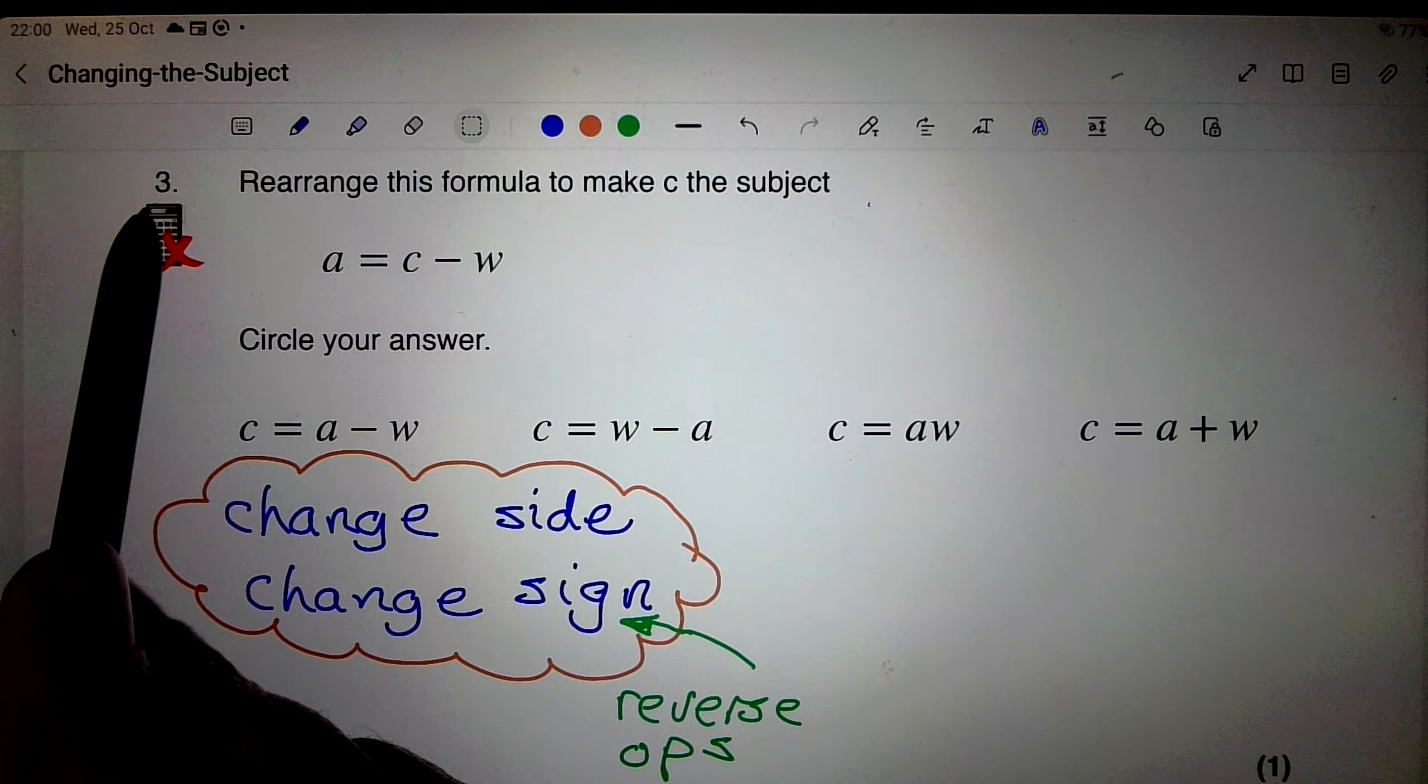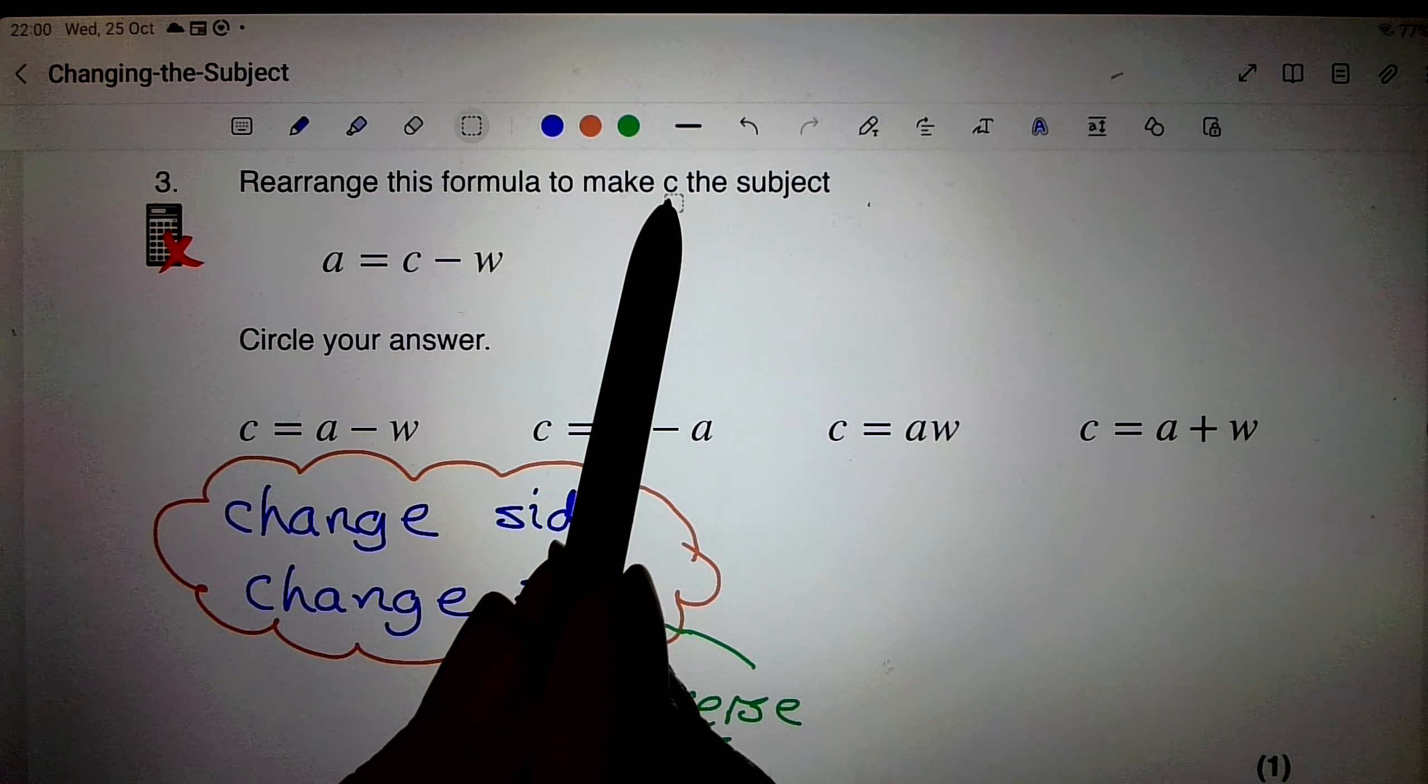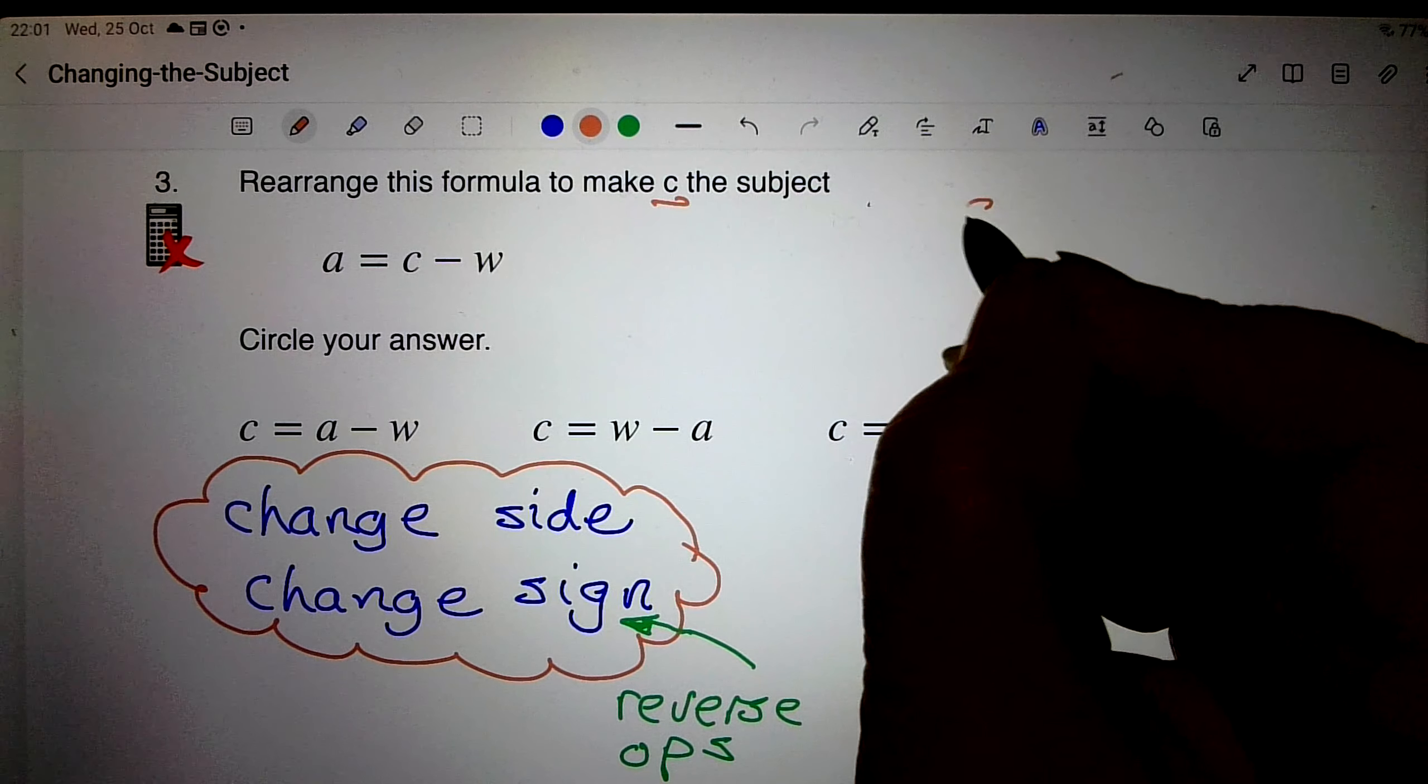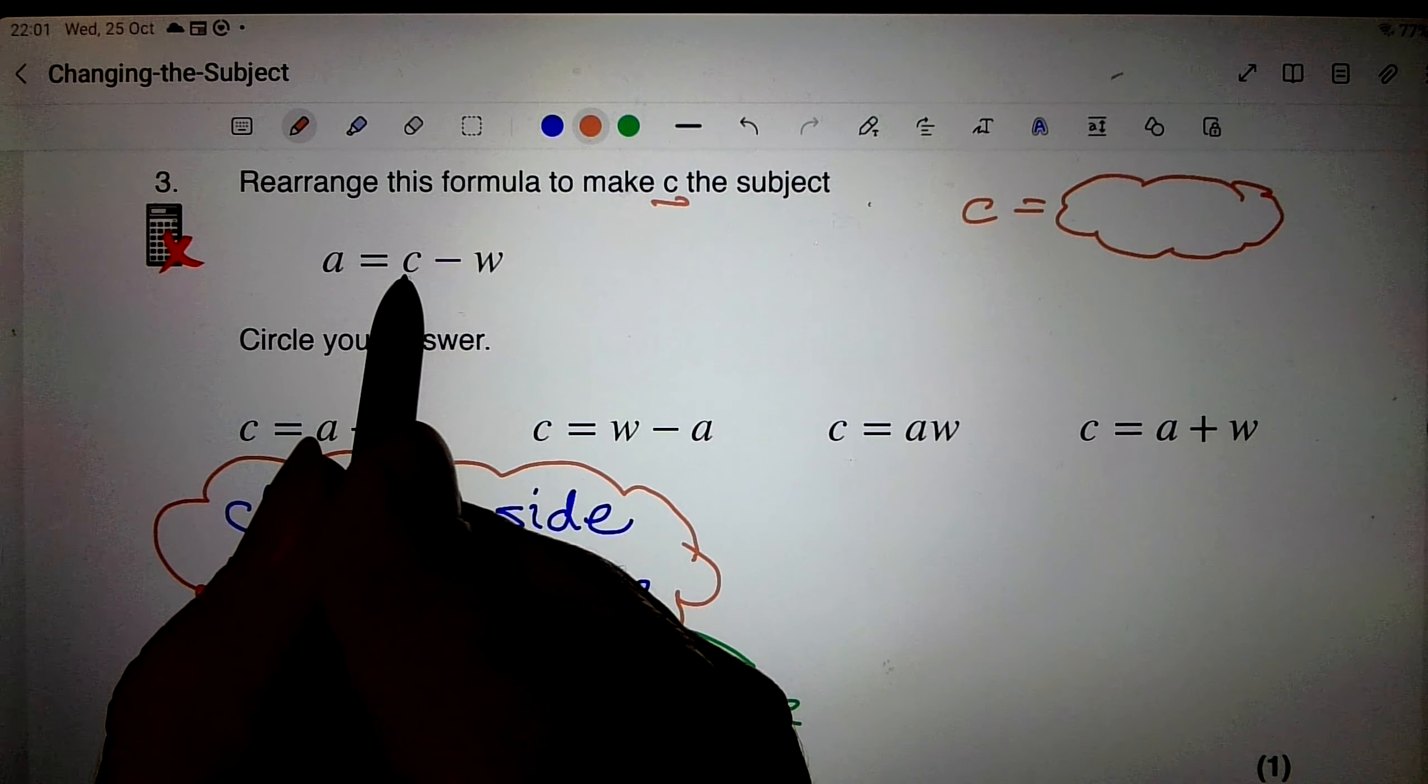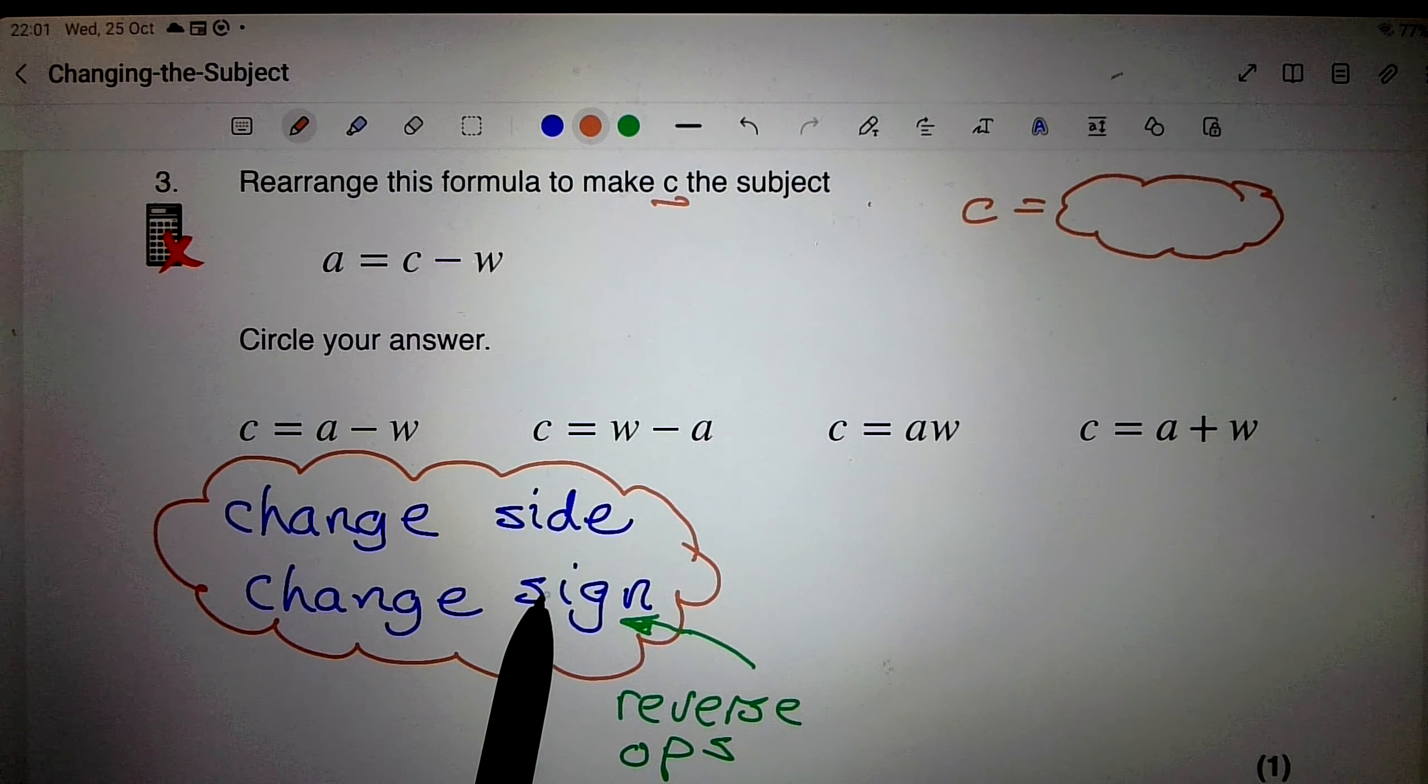Okay, let's have a look at another one then. Number three, rearrange this formula to make c the subject. So I'm going to finish up with something that looks like c equals whatever. Right, I'm going to go a little bit quicker now. I want c by itself, so I'm going to get rid of this minus w. Remember change side, change sign, reverse operation of minus is plus.